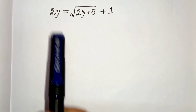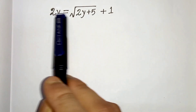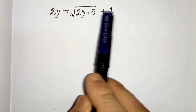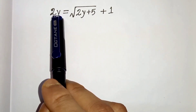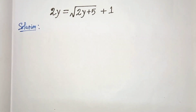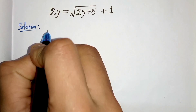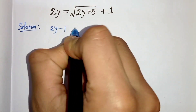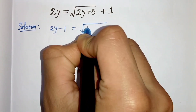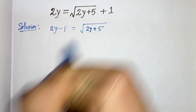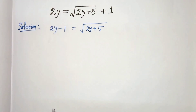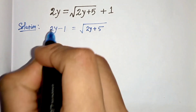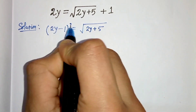In this video we have 2y equals root under 2y plus 5 plus 1, and we have to solve for y. First, we can write 2y minus 1 equals root under 2y plus 5 by subtracting 1 from both sides. Now we will square both sides.